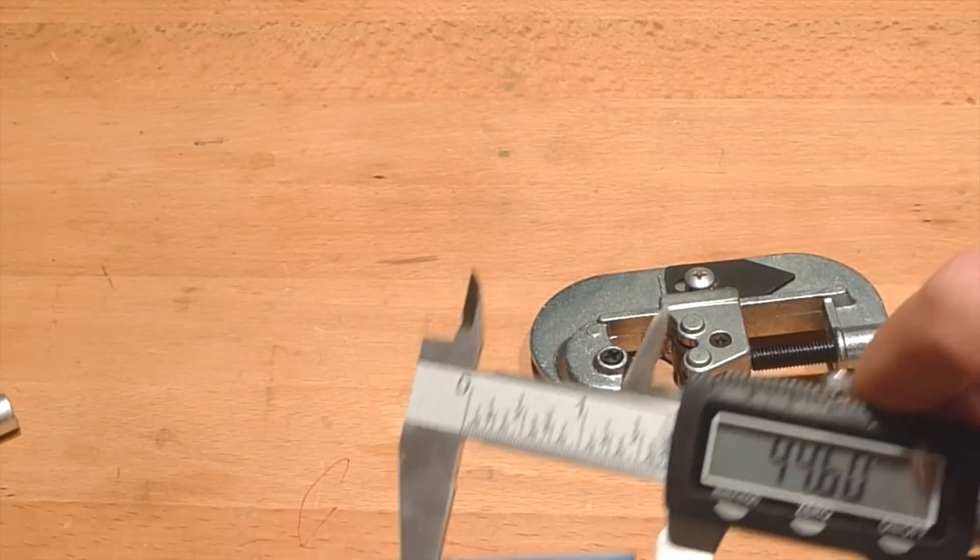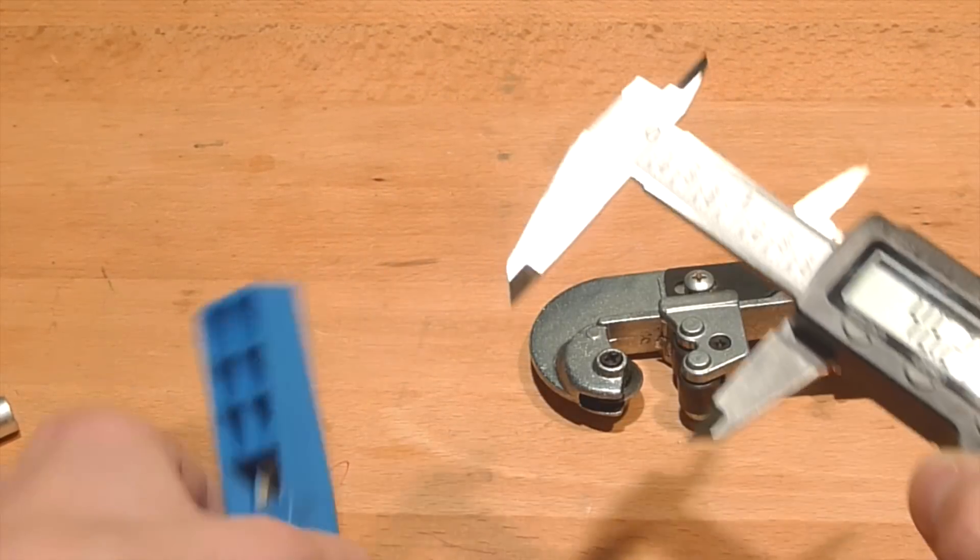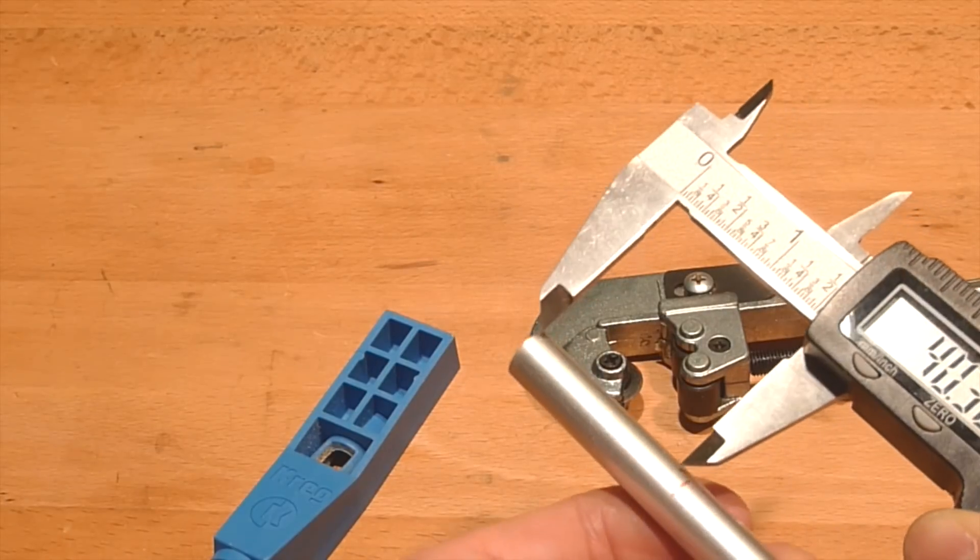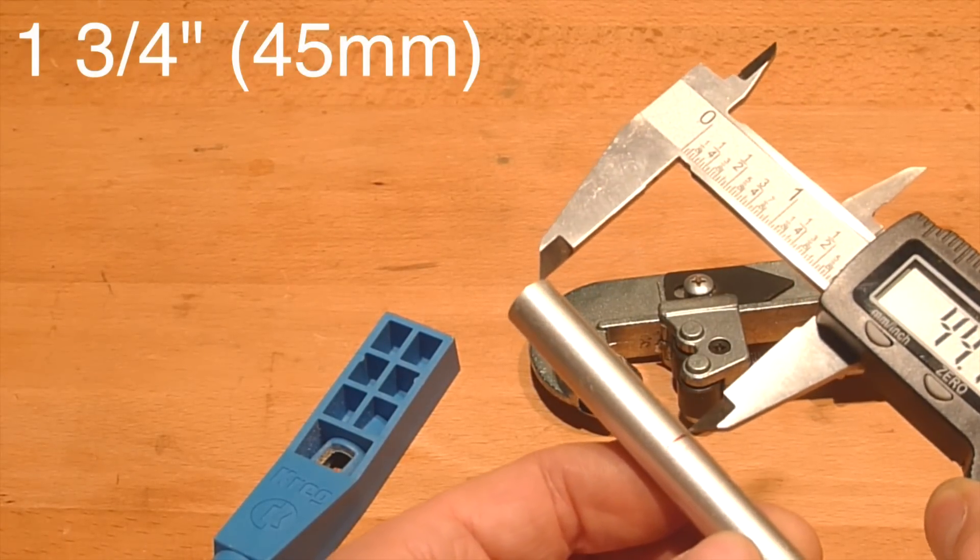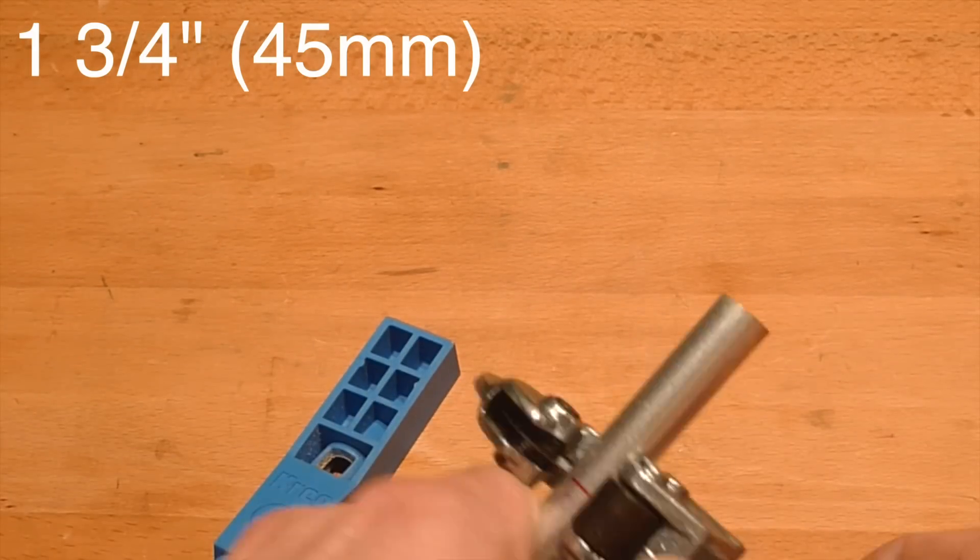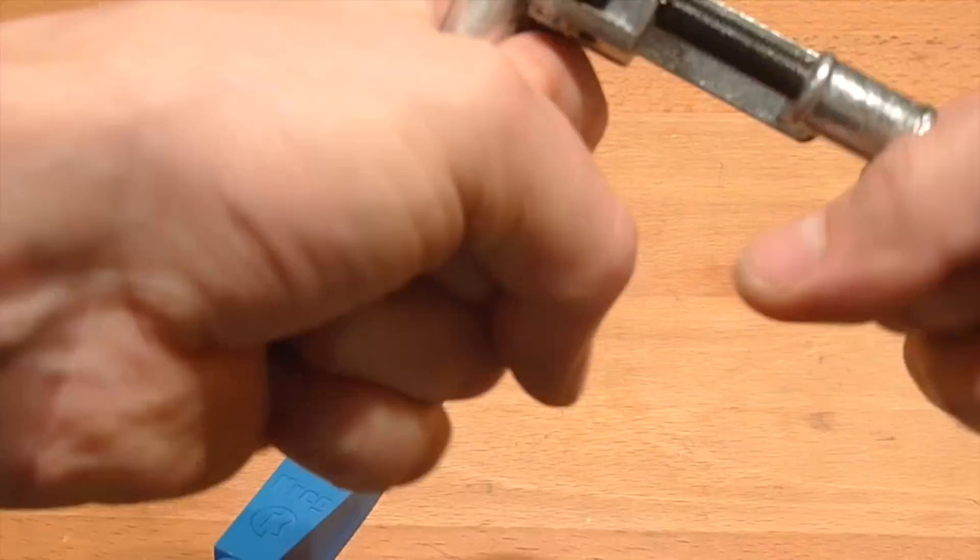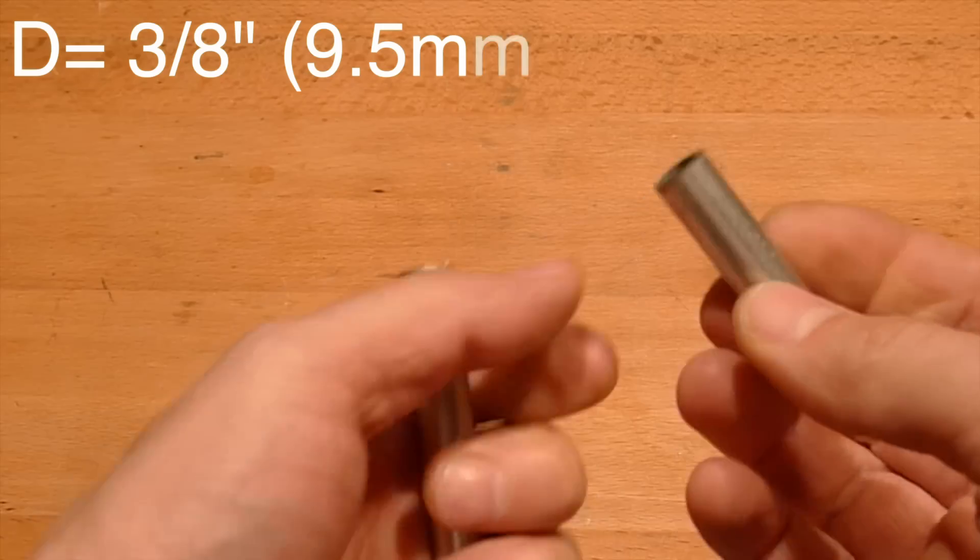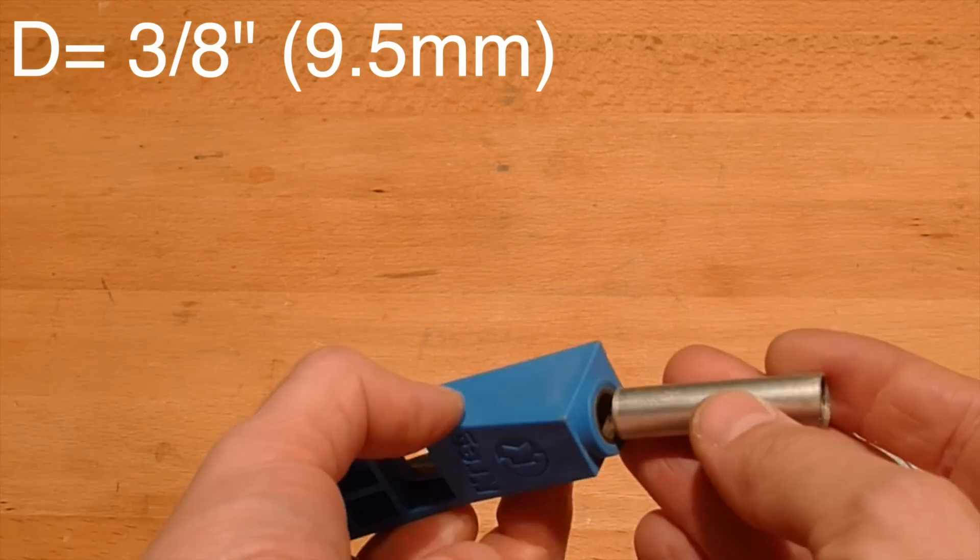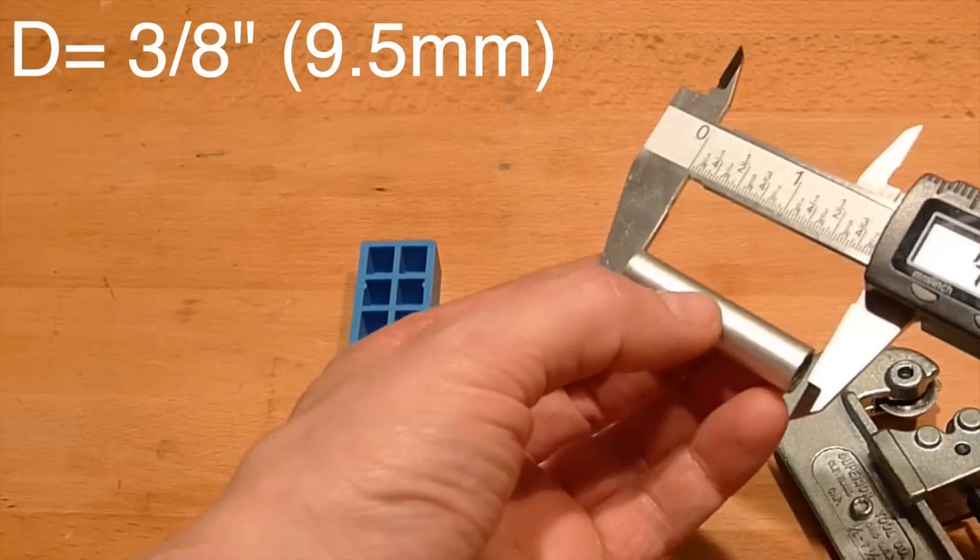Alright let's do it. So I'm measuring the insert. I'm gonna cut the same length which is 1 inch and 3 quarters, about 45 millimeters if you use metric, and the diameter of the tube inside is about 3 eighths or to be precise 9.5 millimeters.